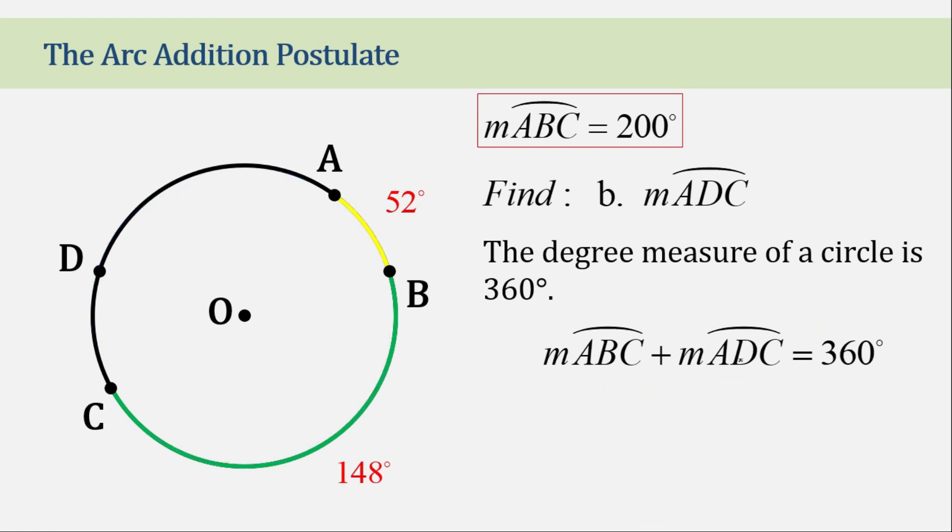You subtract 200 on both sides and you get the measure of 160 degrees for arc ADC.